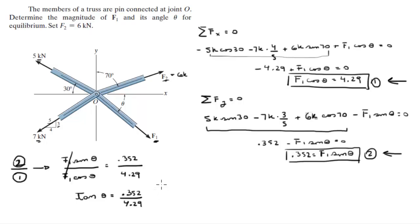So basically theta is going to be the tangent inverse of 0.352 over 4.29. So theta is equal to 4.69 degrees, very small angle.